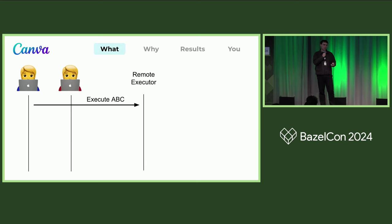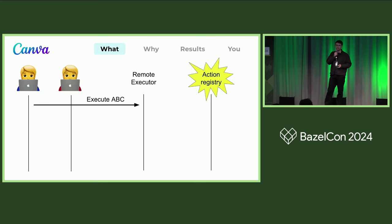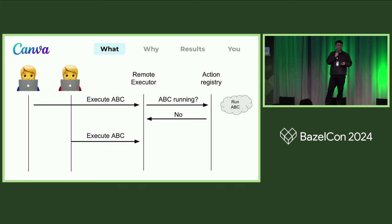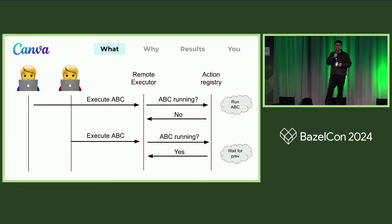Let's see what happens when you have action deduplication enabled on your RBE service. We introduce a new component called the action registry — a database that keeps track of which actions are in-flight. Rather than running the action directly, the executor first queries the registry to see if there's an instance of this action running. There isn't, so we run it. Then the second user sends the same request, does a lookup in the registry, finds out that there is an action running, and so instead of running the action a second time, we just wait for the first execution to finish.